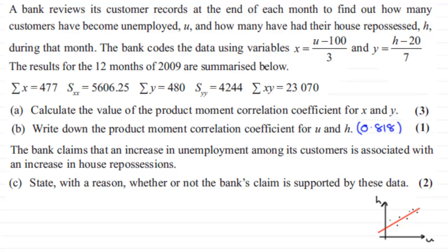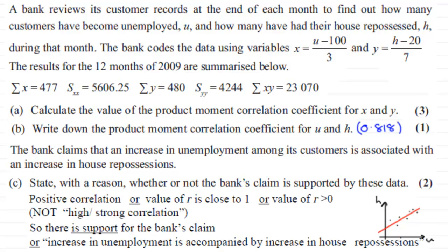So the answer that you could write then is something like this. We've got positive correlation, or you could say that the value of R is close to 1, or R is greater than zero. Certainly not high, strong correlation. So there is support for the bank's claim. Or you could write down that an increase in unemployment is accompanied by an increase in house repossessions. So something along those kind of lines.